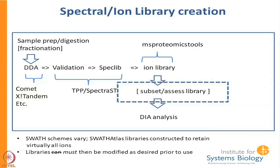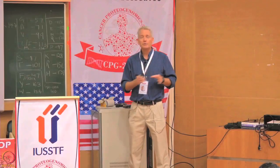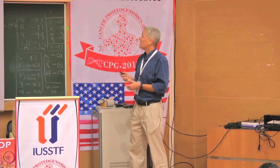The spectral library can be taken and made into an SRM library directly with SpectraST, or it can be made into an ion library — what we call the libraries used with SWATH MS. We make the ion libraries as complete as possible and then apply our own particular criteria such as mass range, preferred B or Y ion composition, and other filters to make an appropriate subset for your data.